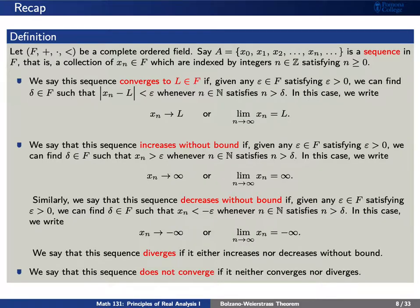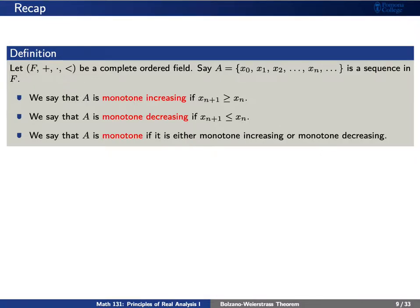Otherwise, we'll just say that our sequence does not converge. Recall that our sequence is monotone if it is either monotone increasing or monotone decreasing. Monotone increasing means x sub n plus 1 is greater than or equal to x sub n, and monotone decreasing means x sub n plus 1 is less than or equal to x sub n.